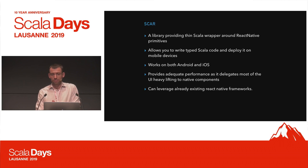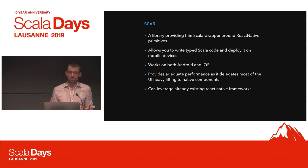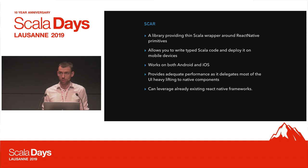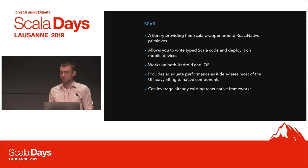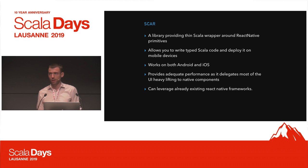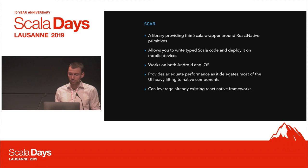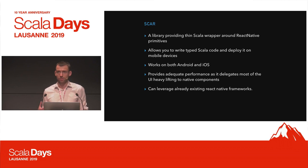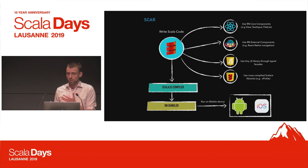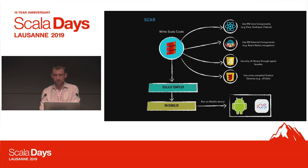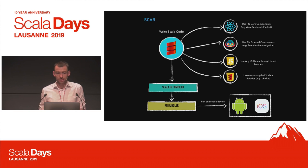SCAR allows you to write Scala code that drives your mobile applications, compiled to JavaScript and deployed to your mobile device. It uses React Native to render things, provides a very thin wrapper around React Native primitives, and allows you to write typed Scala code. It works on both Android and iOS, provides adequate performance by delegating to native UI components, and lets you leverage existing React Native frameworks.